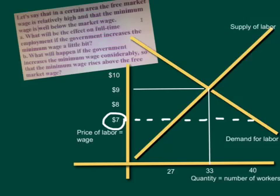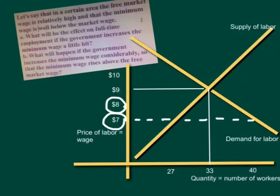The first question asks: what will be the effect on full-time employment if the government increases the minimum wage a little bit? Let's say the minimum wage goes up from $7 to $8. But again, the businesses are already paying $9 in the free market — that's just the normal equilibrium. An increase from $7 to $8 will have no effect on the quantity demanded and quantity supplied. So the answer to Part A is that there will be no effect on full-time employment if the minimum wage goes from $7 to $8.